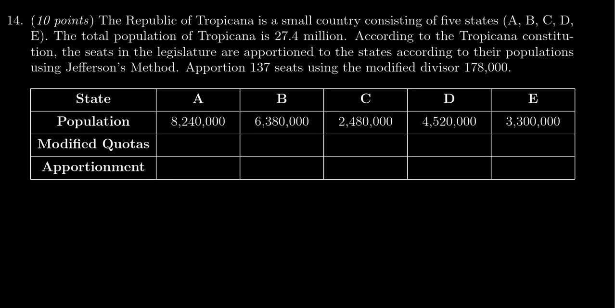In this video we provide the solution to question number 14 for practice exam number three for Math 1030, in which case we have an apportionment problem. We have five states A, B, C, D, E, their populations are given here, the total population for this region is 27.4 million, and we have 137 seats that we have to apportion.